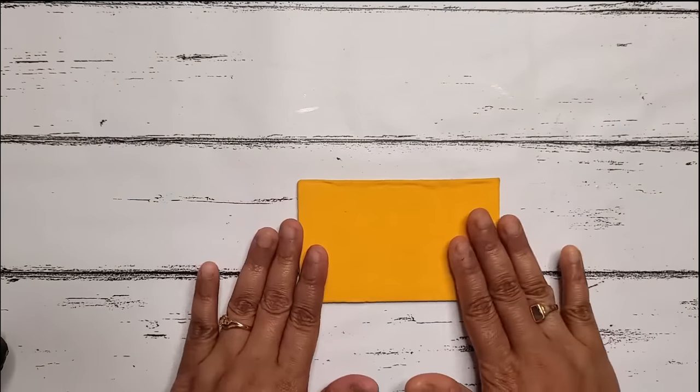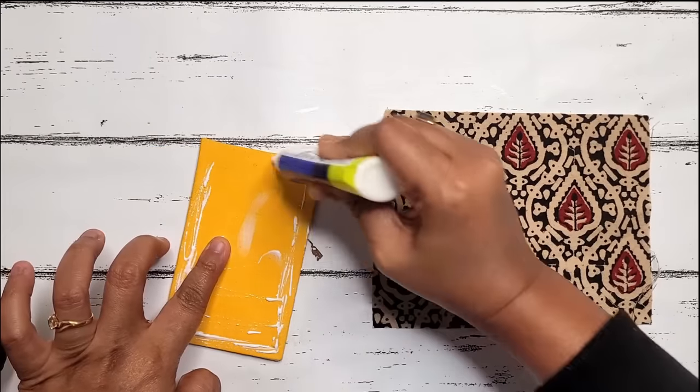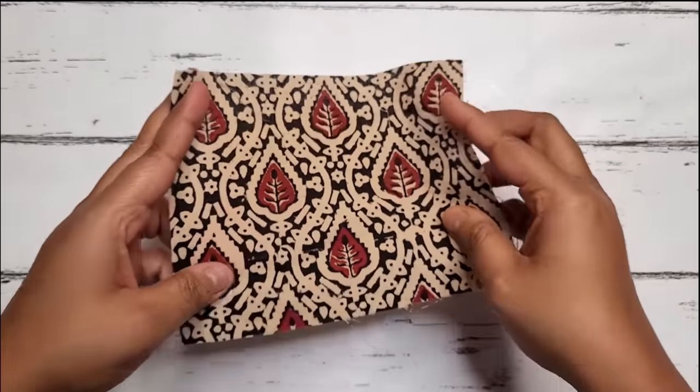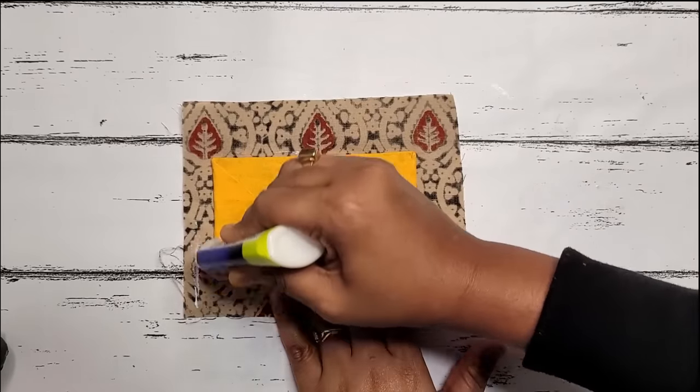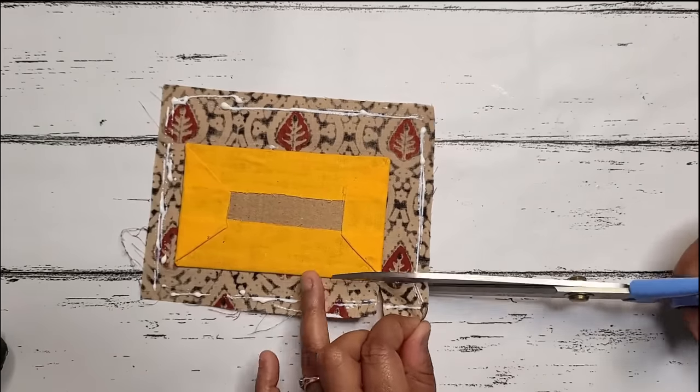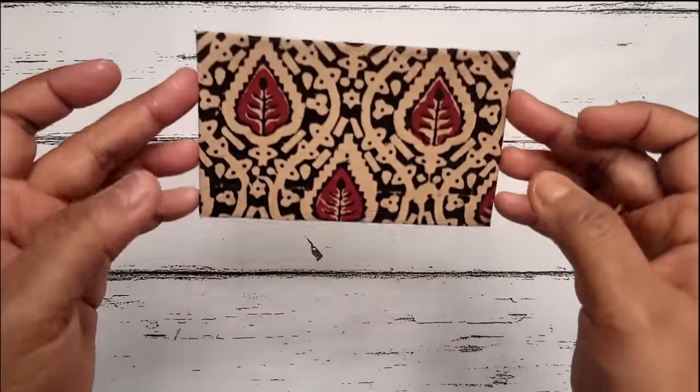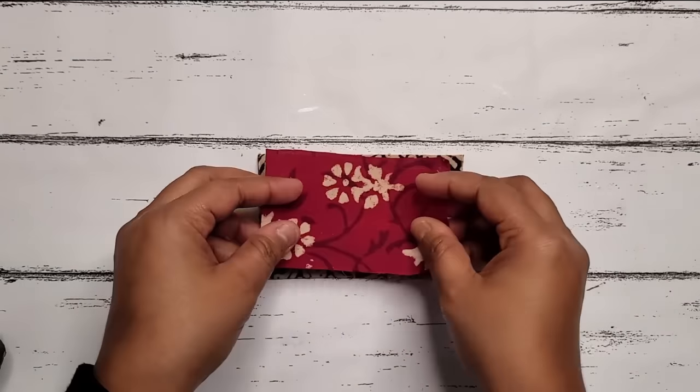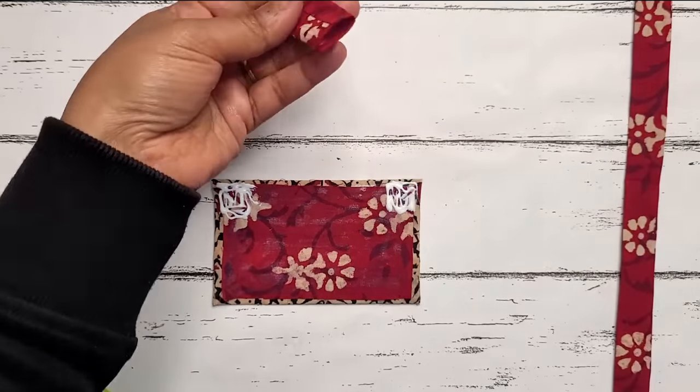Here I'm taking a 4 by 6 inch cardboard and a block printed cotton fabric, applying some glue and sticking the fabric to this cardboard. Cutting the corners and sticking the back side of the fabric following this process. Applying some glue on the back side and sticking a piece of fabric.